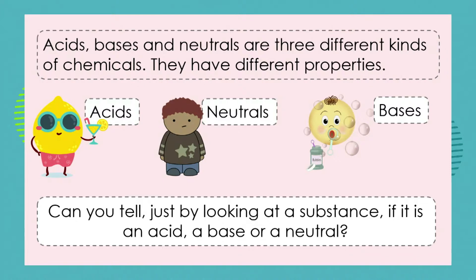To remind you, acids, bases, and neutrals are three different kinds of chemicals and they have different properties. You've spent a lot of time learning about how to recognize an acid or a base from its different properties. But can you tell just by looking at a substance if it's an acid, a base, or neutral?